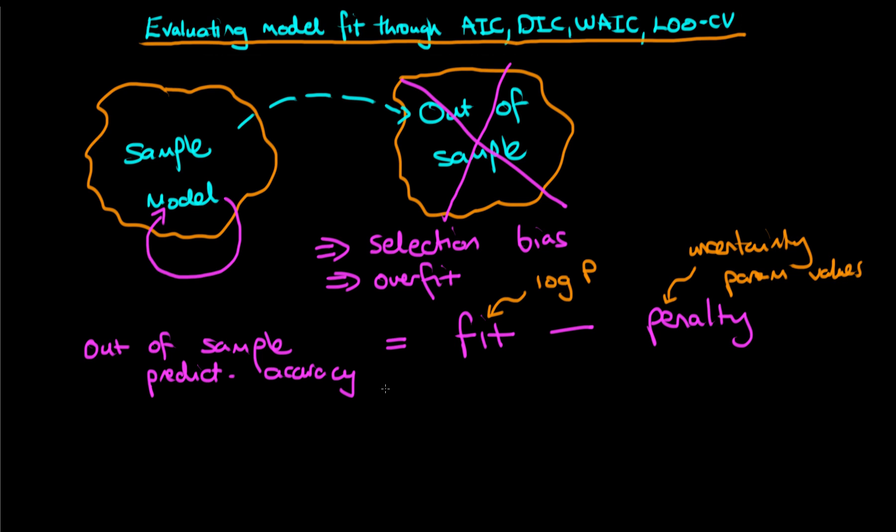Starting with the AIC, the measure of fit which AIC uses is the log likelihood evaluated at the maximum likelihood estimates of the parameters. The penalty which AIC applies to the measure of within-sample fit is just the number of parameters in the model. AIC has some theoretical basis when you look at large sample theory, but for more complicated models, the theoretical basis isn't really applicable. So encouragingly now, quite a lot of people are moving away from AIC as a measure of out-of-sample fit.